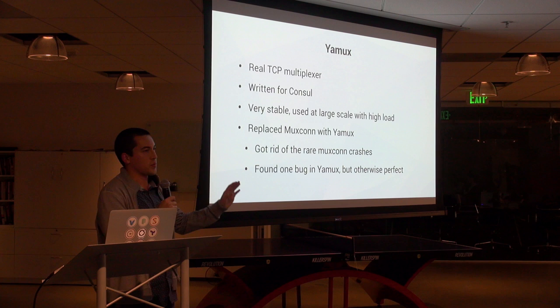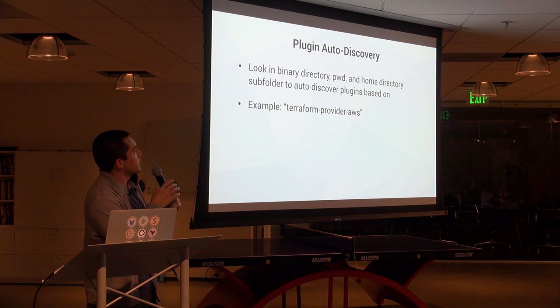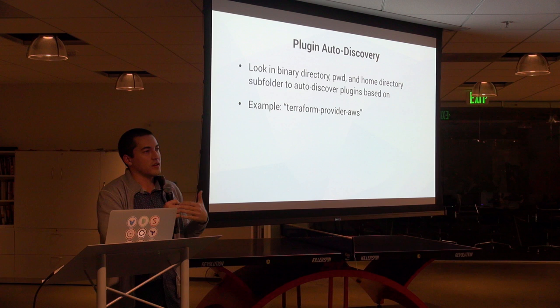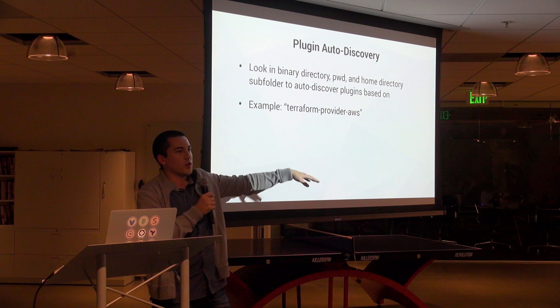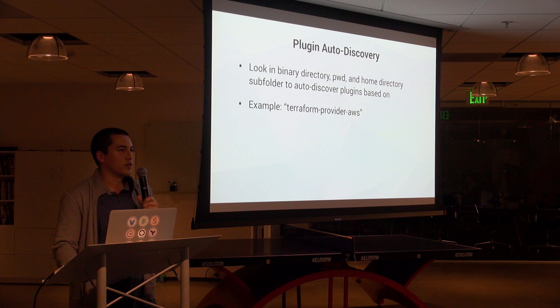Replaced MuxCon with Yamux, got rid of all the crashes. Then plugin auto-discovery: I made it so that I'd look in the directory with binaries, your current working directory, and your home directory, and if the binary name matched a certain glob pattern, I would try to load it. With Terraform, if you name a binary 'terraform-provider-aws' and put it in one of those directories, Terraform will just find it and load it as a plugin — zero configuration necessary. At some point we also switched to MessagePack.